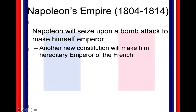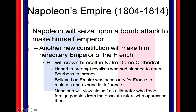The question we're asking ourselves is: what did France achieve by this? We talked about the hypocrisy of Napoleon towards the revolution — how he was revolutionary and how he was not. This is yet another thing that does not make Napoleon very revolutionary: he has now made himself hereditary emperor of France. He's going to crown himself in Notre Dame Cathedral, in hopes to preempt a royalist who had planned to return the Bourbon to the throne. He believed an empire was necessary for France to maintain and expand its influence, and Napoleon also viewed himself as a liberator to free foreign peoples from absolute rulers who oppressed them — though ironically, Napoleon is going to turn around and oppress some of those peoples.